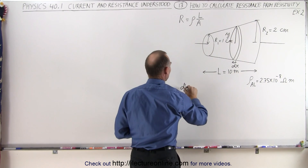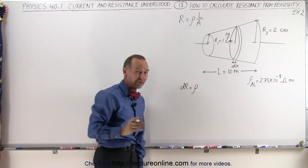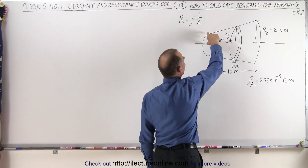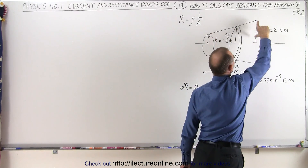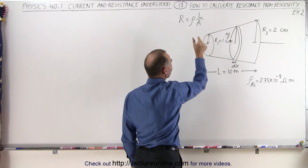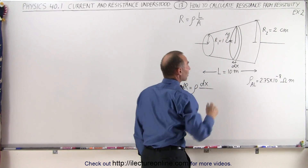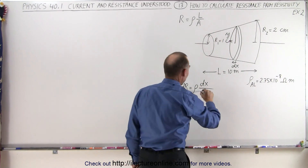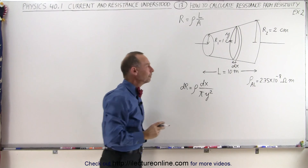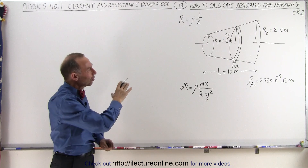We can say that dR is equal to the resistivity of the material — assuming it's aluminum, that's 2.75 times 10 to the minus 8 ohm·meters. Notice that the radius at the beginning is 1 centimeter, at the end it's 2 centimeters, and the length is equal to 10 meters. So we have the resistivity times the length, which is dx, divided by the cross-sectional area. That's a circle, so it's π times r squared, but in this case r is y, so we write it as y squared. That means we have to find an equation that relates x to y.